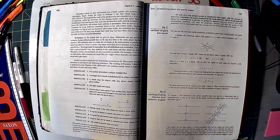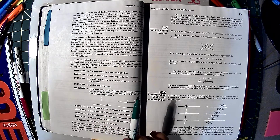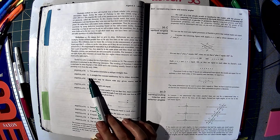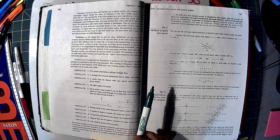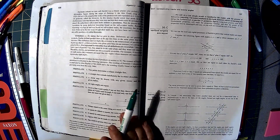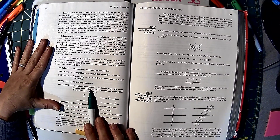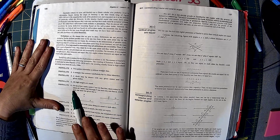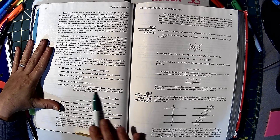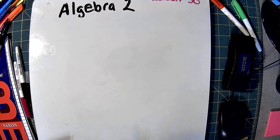If you want to look on page 136, we've got our postulates. Number one: two points determine a unique straight line. A straight line extends indefinitely far in either direction. A circle may be drawn with any given center and any given radius. All right angles are equal. We're not going to read all of these, but we will be using a couple to prove things.